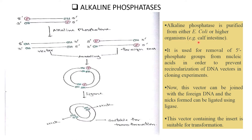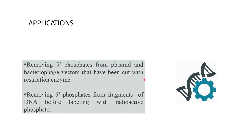Alkaline phosphatase is purified from either E. coli or higher organisms — for example, calf intestine. It is used to remove the 5' phosphate group from nucleic acids in order to prevent the recircularization of the DNA vector in cloning experiments. This vector can then be joined with foreign DNA, and the nick formed can be ligated using ligase. This vector, containing a suitable insert, is suitable for transformation.